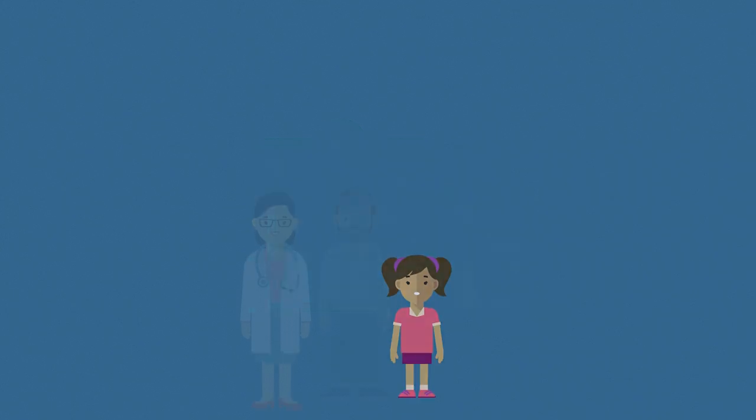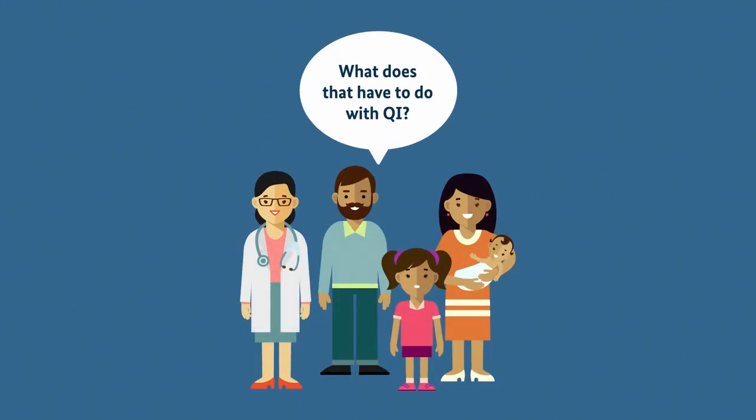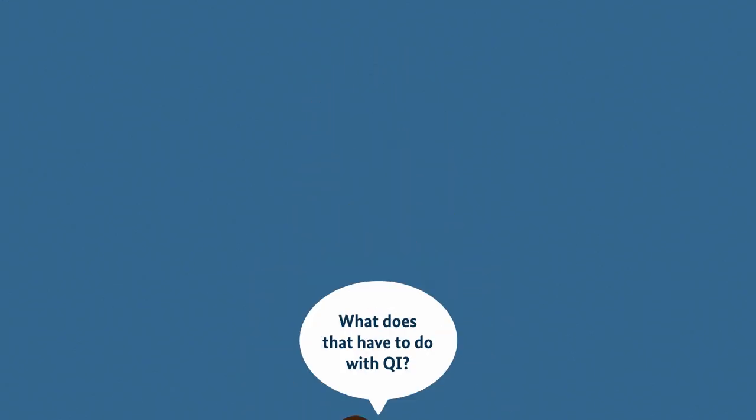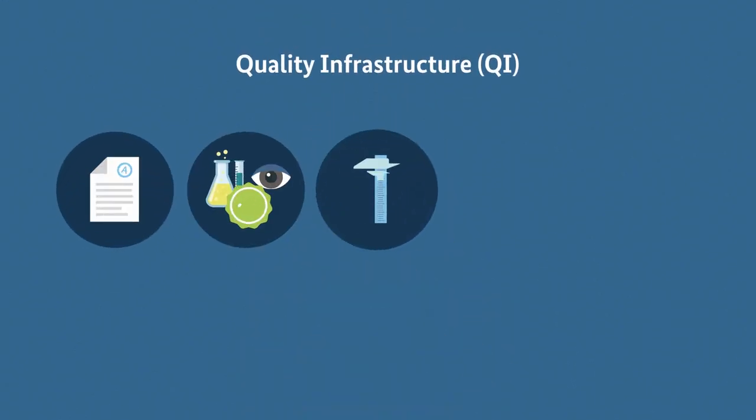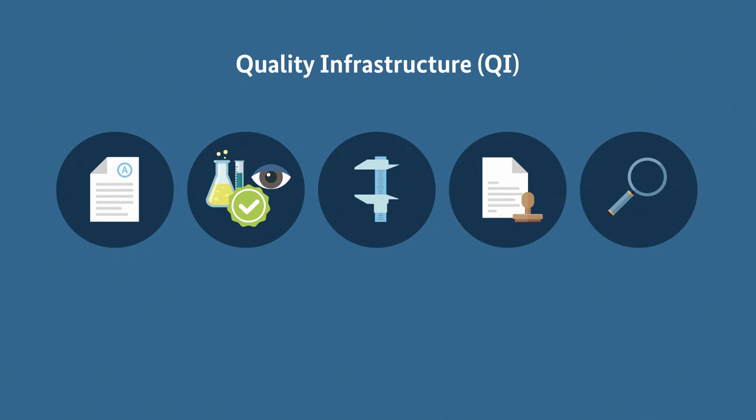Now what does that have to do with quality infrastructure? A lot. Quality infrastructure, QI for short, is a system put in place to ensure products and services are safe and of high quality.